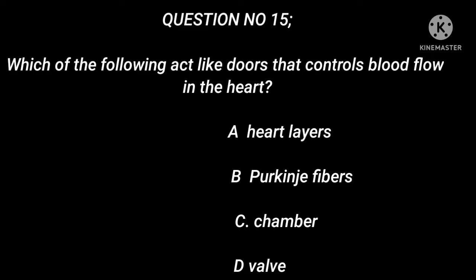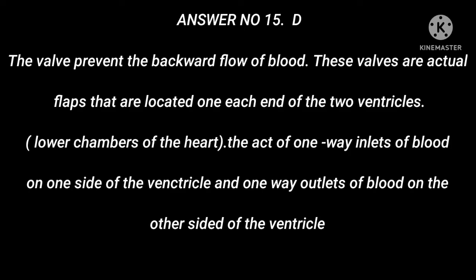Question number 15: Which of the following acts like doors that control blood flow in the heart? A. Heart layers. B. Purkinje fibers. C. Chambers. D. Valves. Answer number 15: D. The valves prevent the backward flow of blood. These valves are actual flaps located at each end of the two ventricles, the lower chambers of the heart. They act as one-way inlets of blood on one side of the ventricle and one-way outlets of blood on the other side of the ventricle.